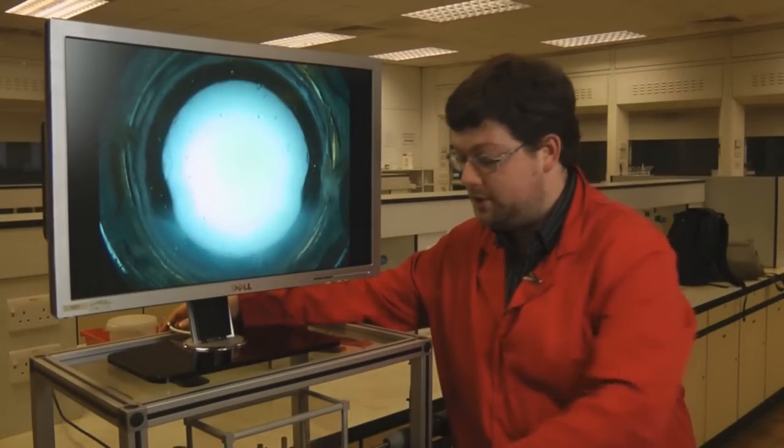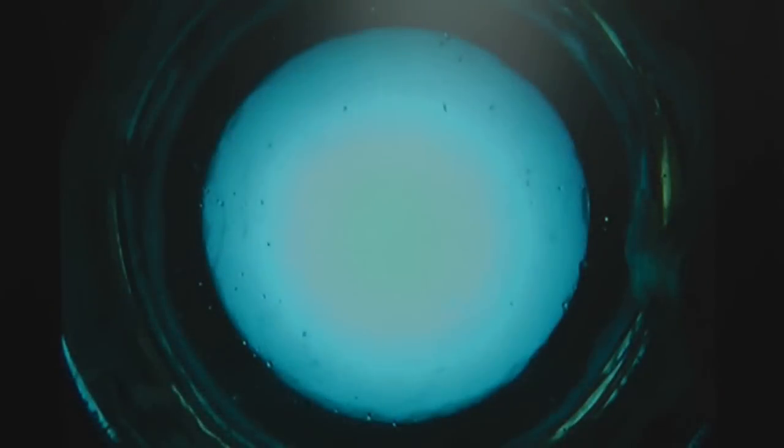If we run the demonstration in reverse, we'll cool the cell down and see the opposite thing happen. When the temperature of the cell reaches approximately 45 degrees, we'll see this phase separation occurring, and we'll regenerate the liquid phase and the vapor phase.